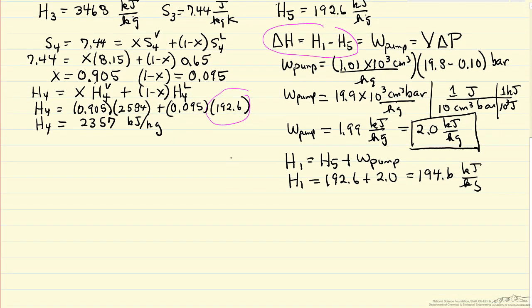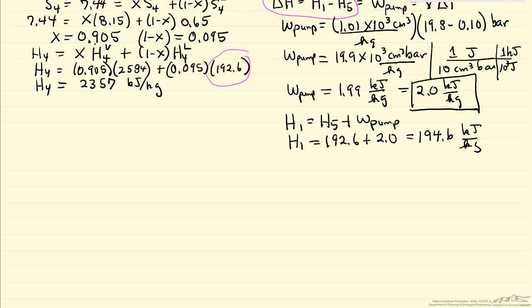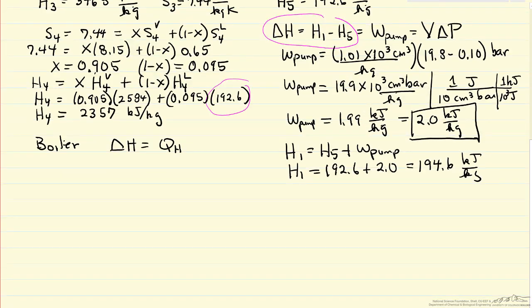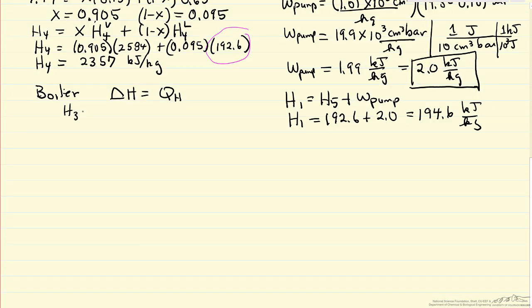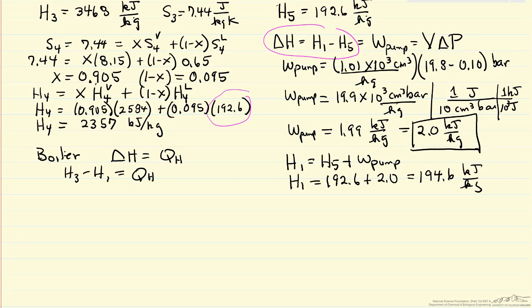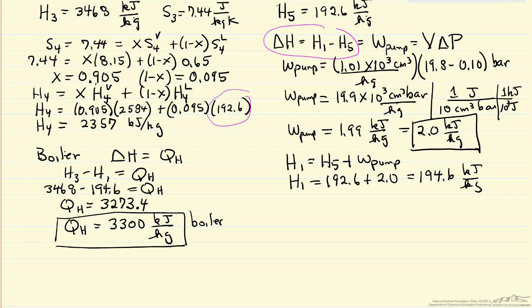Now for the boiler energy balance: ΔH = Q, there's no work done. This is Q_H, the heat added. ΔH = H3 - H1, so Q_H = H3 - H1. We've determined both H3 and H1, so substituting those values gives Q_H = 3300 kJ/kg, reduced to two significant figures as given in the original problem.